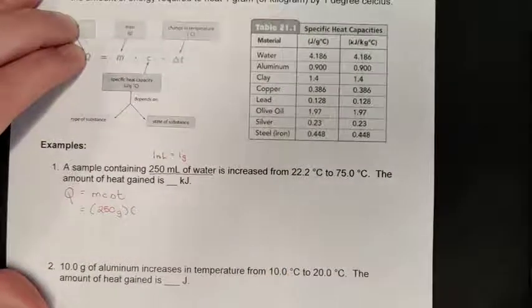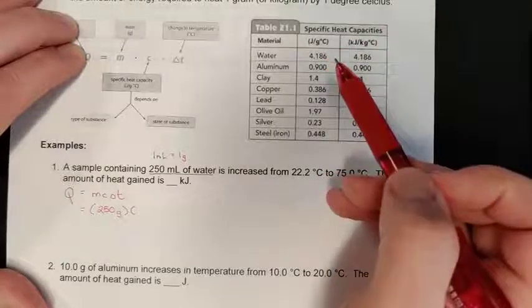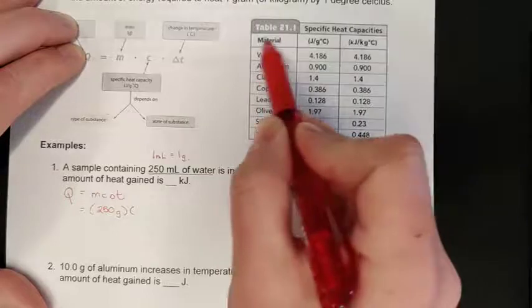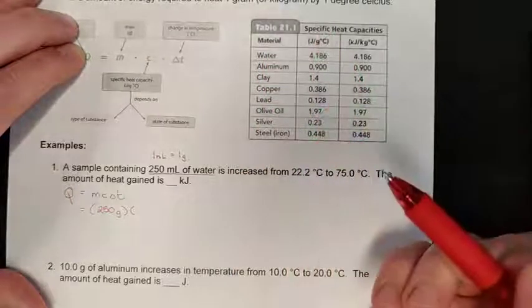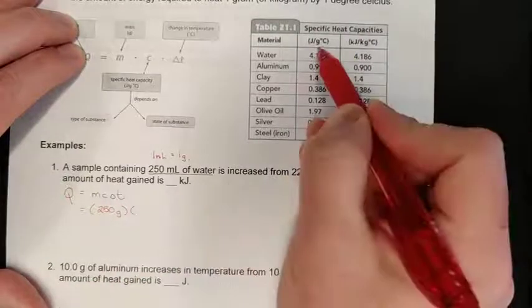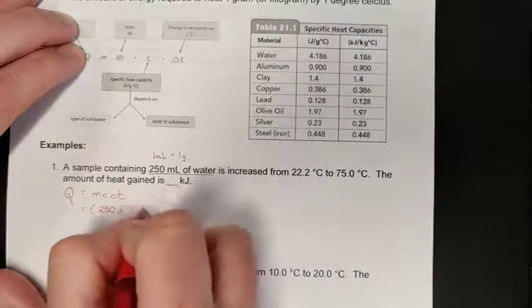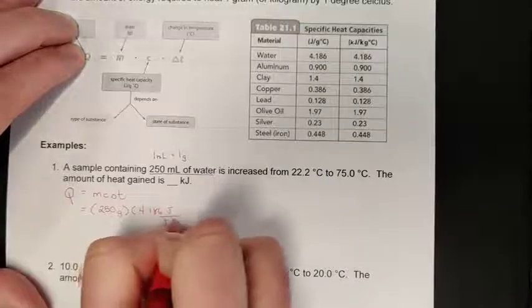If we go to our data table, you'll find this in your data booklet on I think it's page three, just past the periodic table. We do have the materials, there's a list of I think five or six of them in your data booklet, and you have specific heat capacities given for each one. Since I have a mass here in grams, I'm going to use the joule per gram degree C value for water, which in this case is 4.186 joules per gram degree C.